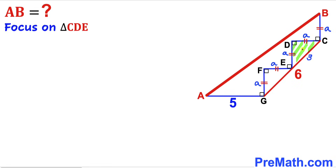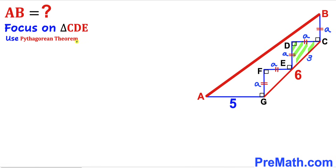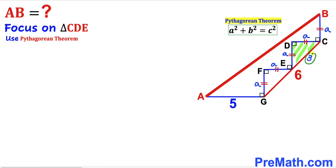Now we are going to focus on the tiny right triangle CDE and apply the Pythagorean theorem to find the value of lowercase a. Our Pythagorean theorem is A² + B² = C². In our case the hypotenuse is 3 and the two other legs are both lowercase a. Let's fill in the blanks in this formula.